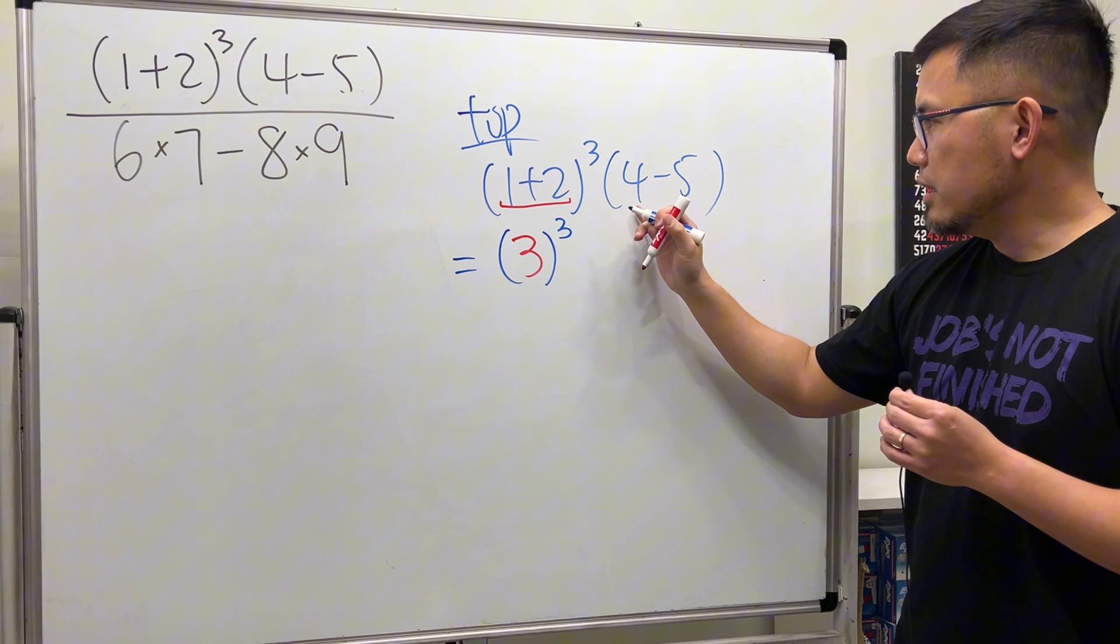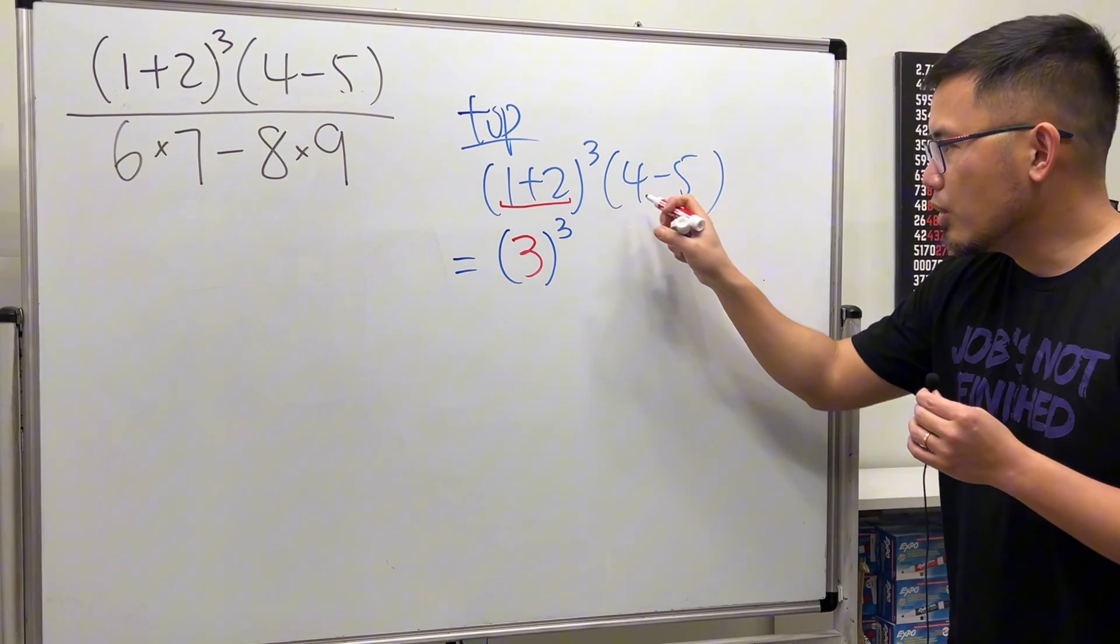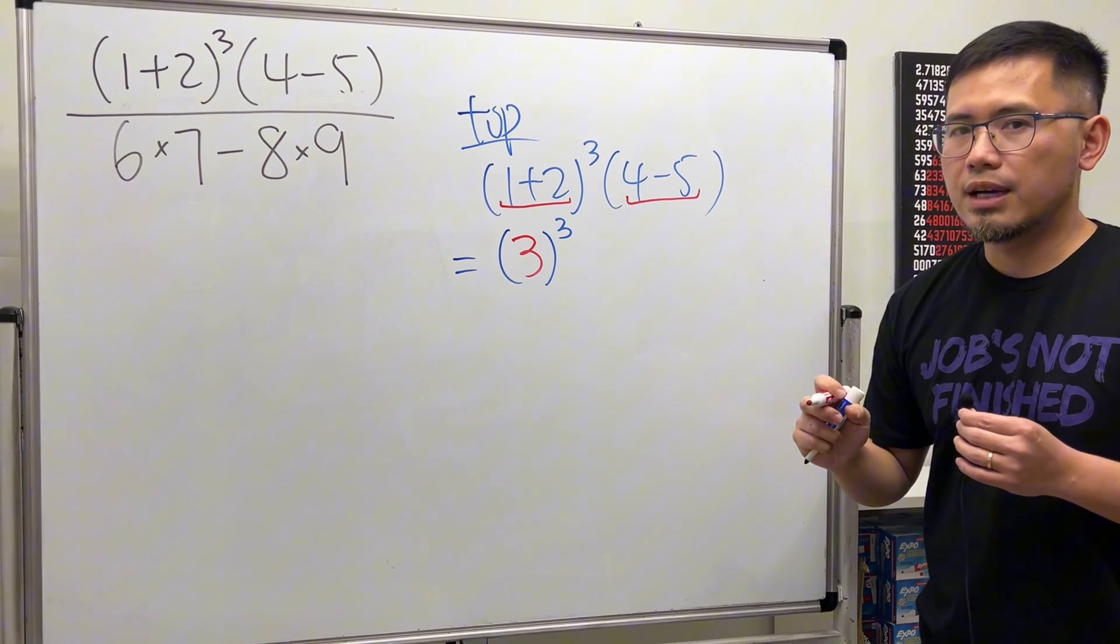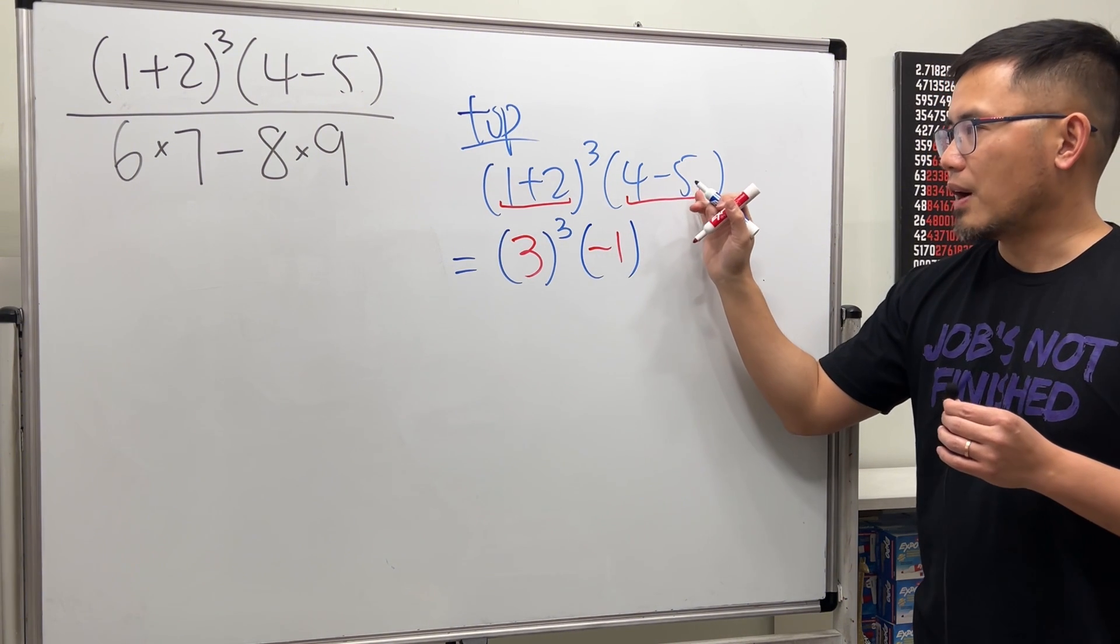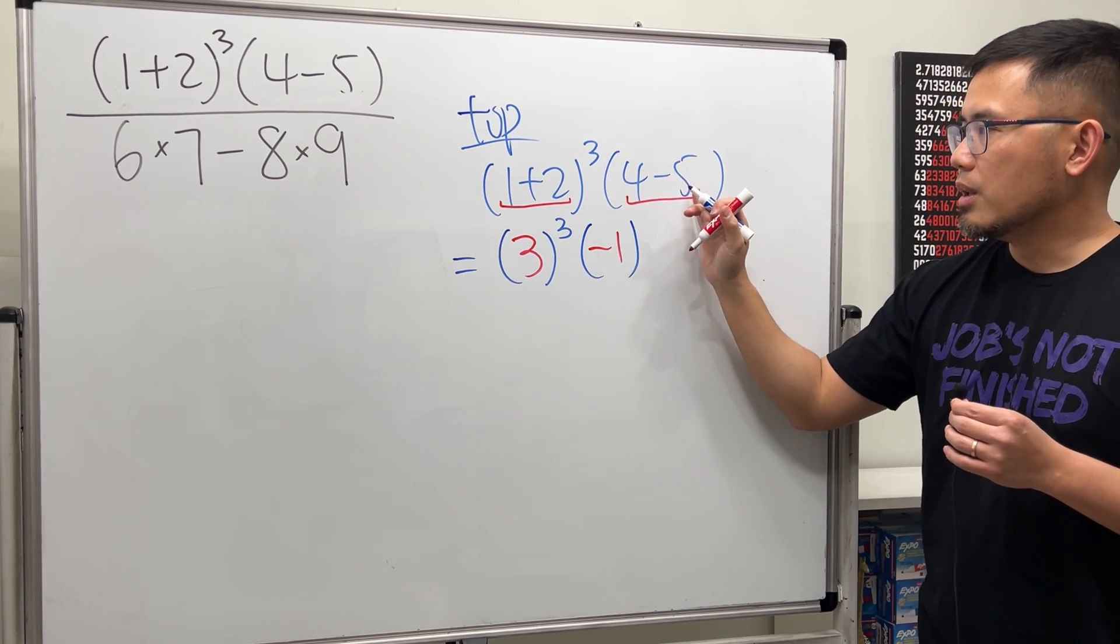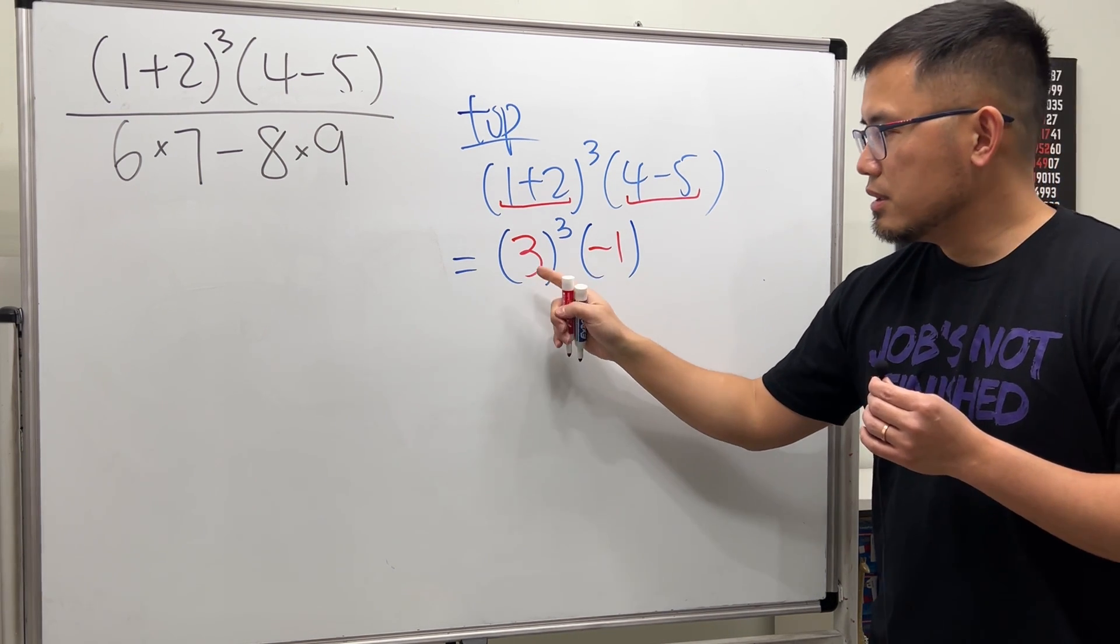So let's write down 3 and then maintain this parentheses and then to the third power. And then here we see that we have 4-5, that's also inside the parentheses, so I'm going to also work that out. 4-5 we get negative 1. Yeah, this 5 is bigger than 4 and then we are taking more from the 4.